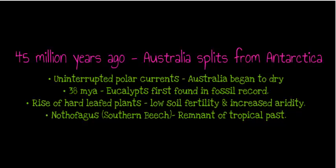38 million years ago, there is some evidence that eucalypts were found in the fossil record, though some textbooks put this date a little later in the Cenozoic period. We also see a rise of hard-leaf plants, mainly due to low soil fertility and increased aridity of Australia. The organisms that were able to survive had adaptations that allowed them to survive in this environment.